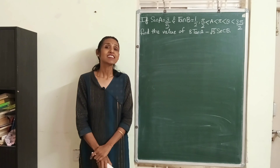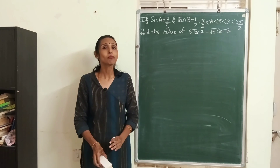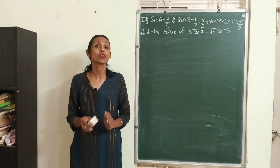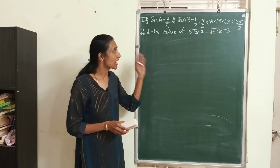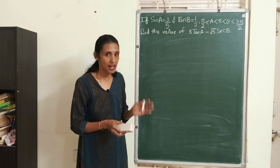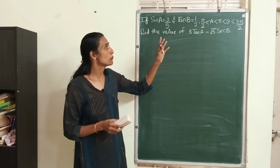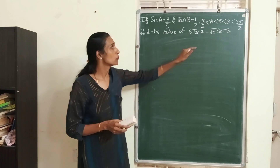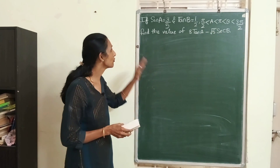Hello everyone! Today let's learn how to find trigonometric ratios when the angles are more than 90 degrees. Here is the question: if sin A is 3/5, tan B is 1/2, and angle A is between π/2 and π, and angle B is between π and 3π/2, we have to find the value of 8 tan A minus √5 times sec B.